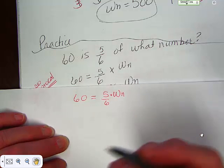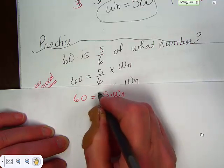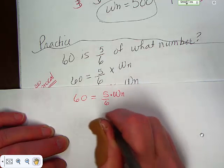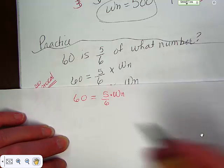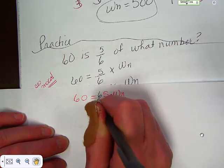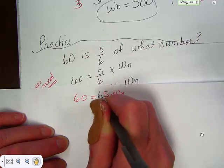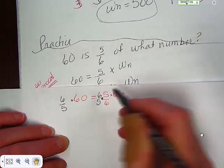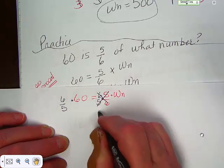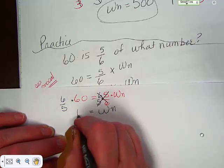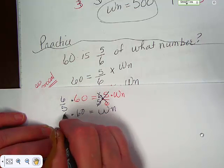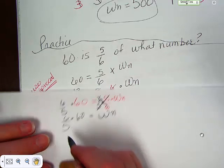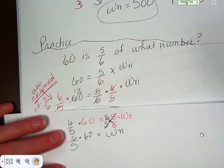With multiplication, the opposite is division, and in this case, rather than going through all of the trouble to put the five-sixths down here and then bring it up and flip it and all that, we just know that if we take six-fifths times five-sixths, which is its reciprocal, we will get rid of this number, and we're left with just what number equals 60 times six-fifths. And I think we can cross-reduce, and you'll see it on here that we cross-reduced.